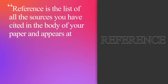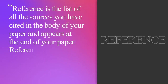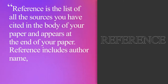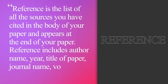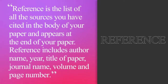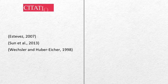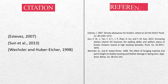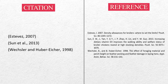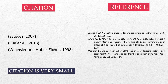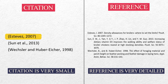Whereas reference is the list of all the sources you have cited in the body of your paper, and it appears at the end of your paper. Reference includes author name, year, title of paper, journal name, volume, and page number. So this is the citation and this is the reference — can you notice the difference? As you can see, citation is very small, including author name and year, whereas reference is very detailed with all the information.